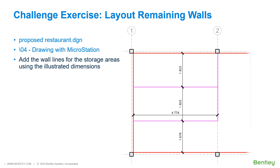For this challenge exercise, you will continue to work in the proposed restaurant DGN file found in the 04 Drawing with MicroStation folder. As part of this, you will finish laying out the single line wall representations for the restaurant. Using the correct levels,